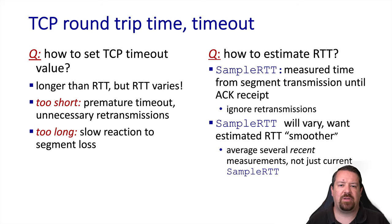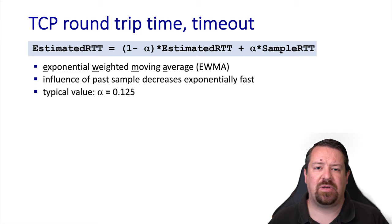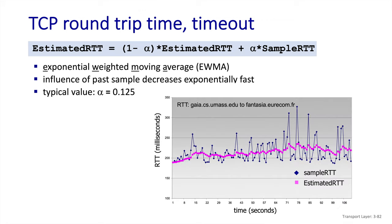TCP has a particular algorithm for estimating the round-trip time and setting the timeout accordingly. It starts by sampling the round-trip time — measuring the time between sending a packet and receiving the acknowledgement. TCP then uses the samples of round-trip time and averages them together using an exponentially weighted moving average, so that some weight is placed on the existing estimate while being updated by new samples. We can see in the plot that while the estimate responds to individual samples, overall it forms a much smoother plot than the raw sample data.